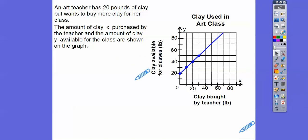An art teacher has 20 pounds of clay but wants to buy more clay for her class. The amount of clay x is purchased by the teacher, and the amount of clay y available for the class is shown on this graph.